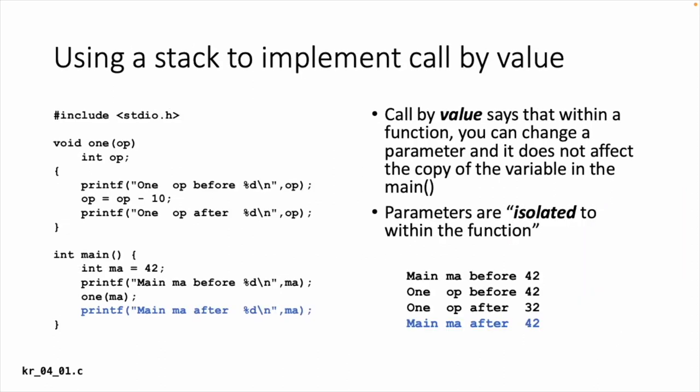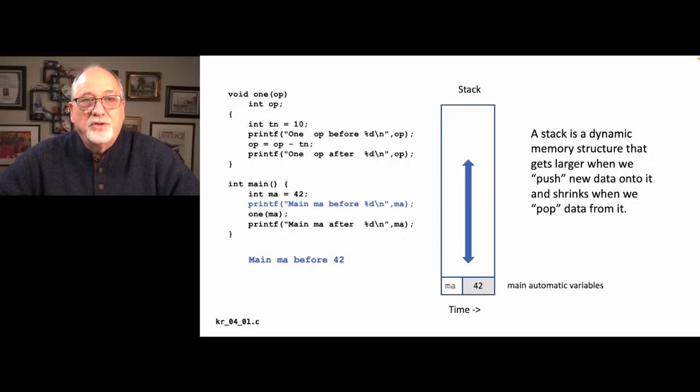Historically, when we talk about call by value and call by reference, we say that call by value means that a value — like in the main program MA with a value 42 — ends up being copied into the function. The parameter OP has got a copy of the 42; it's not the original MA. So we can subtract 10 from it inside the function, but when we get back in the main function, MA has been unchanged. Call by reference means the stuff you do in the function can affect outside the function. Let's talk about how a stack is used to accomplish this.